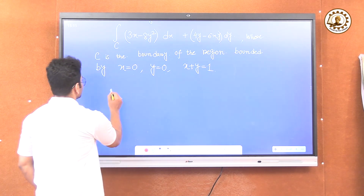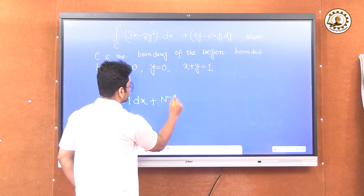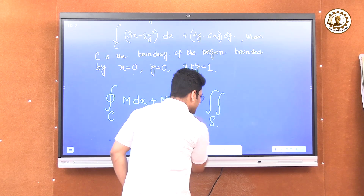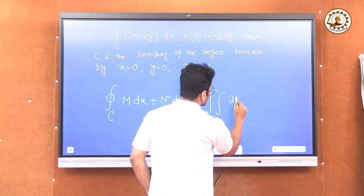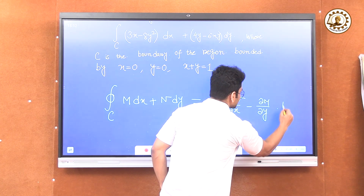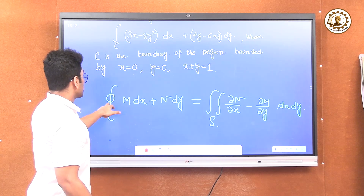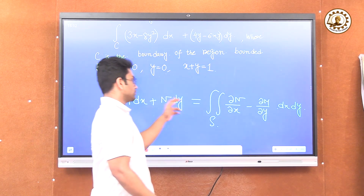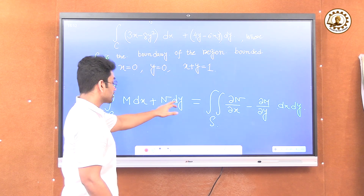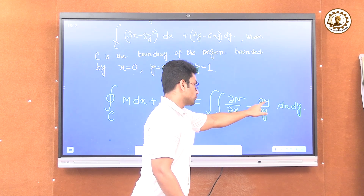According to Green's theorem, the closed line integral of M dx plus N dy equals the double integration over the surface S of (del N / del x minus del M / del y) dx dy. This is the statement of Green's theorem.